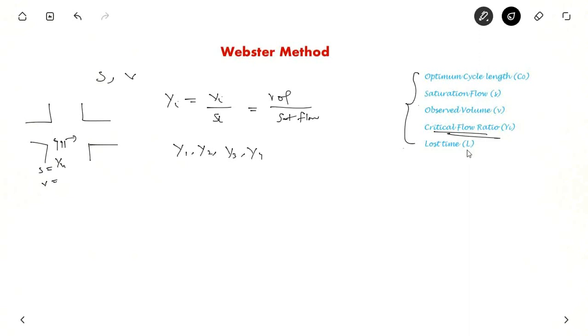And what is loss time? Loss time, as you saw, because of vehicle discharge, first few vehicles took lot of time. So loss time is usually given per phase. So loss time equal to loss time per phase into number of phases. And if there is any all red time, it is plus all red time. Usually all red time is zero.